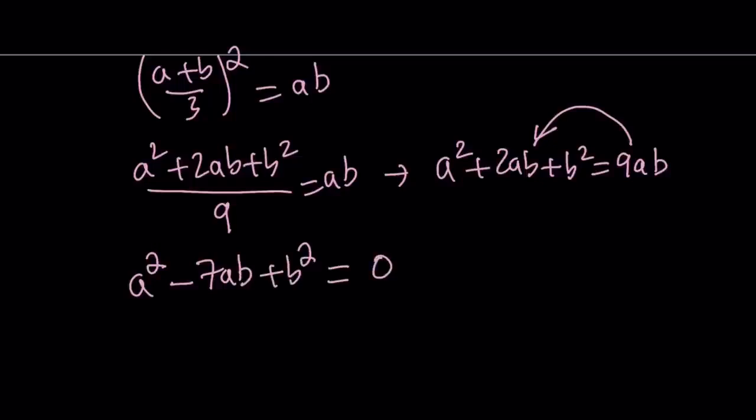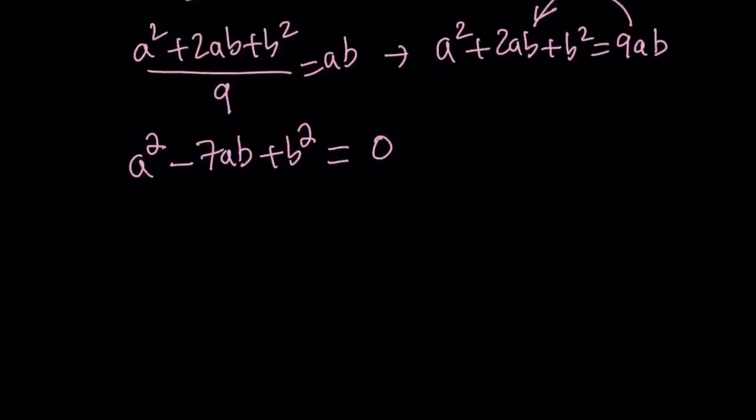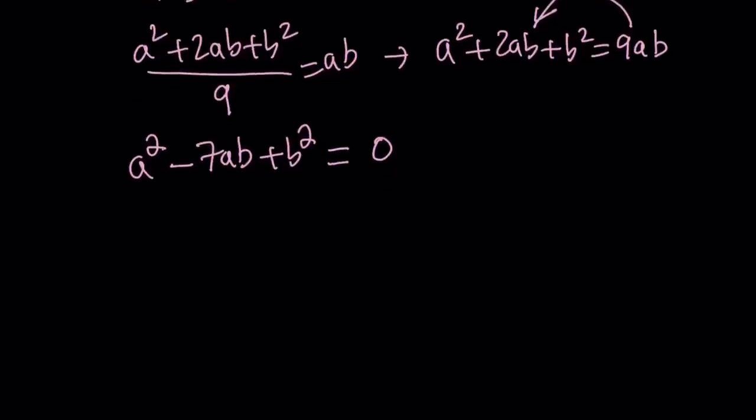Let's go ahead and subtract 9ab from both sides. That way we're going to get a quadratic a² - 7ab + b² equals 0. I call this a quadratic because every term is basically a second power, but there are two variables. So we need to turn this into something more manageable. And remember, we're looking for a/b, right? So how do you find a/b from here?